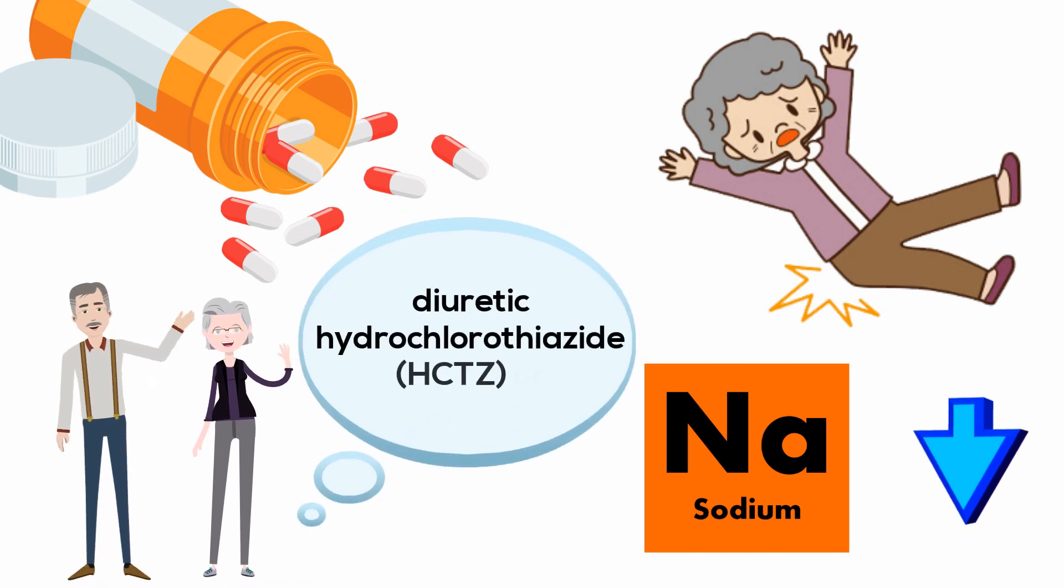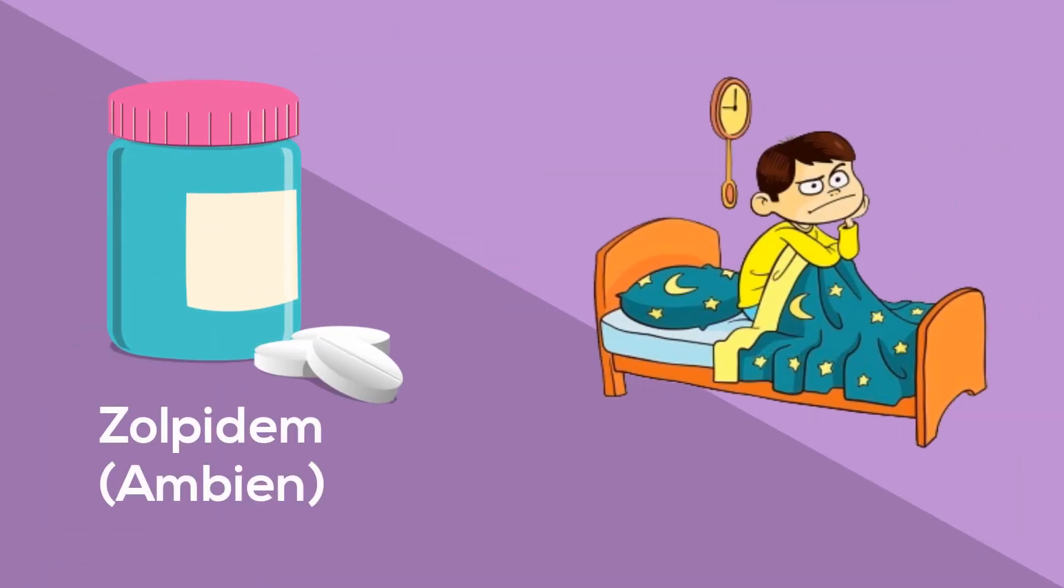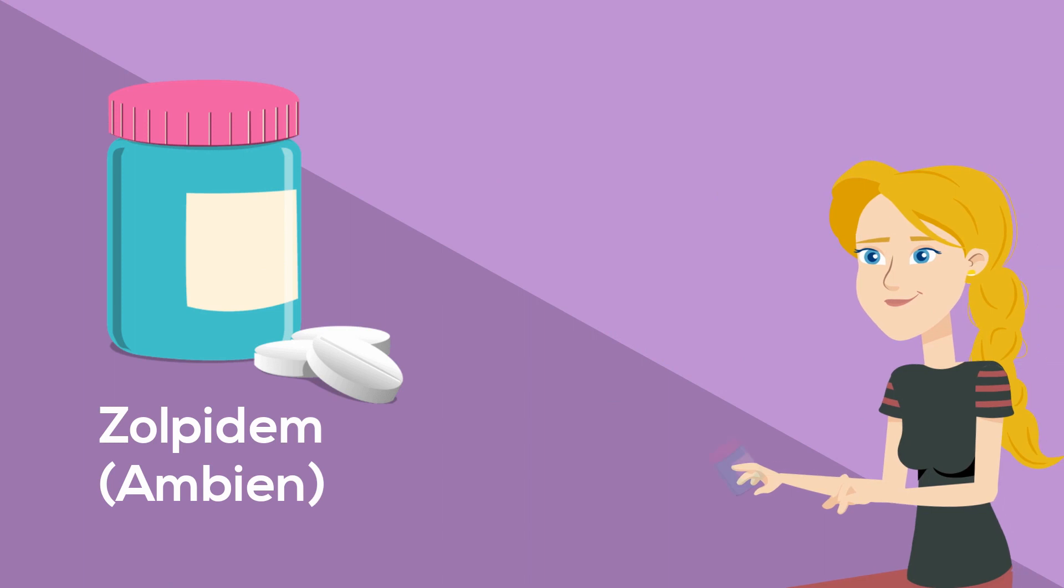Hydrochlorothiazide or furosemide. Zolpidem (Ambien) is used to treat insomnia. Women should take no more than 5 milligrams at bedtime. Use can cause delirium, falls, fractures, and motor vehicle accidents.